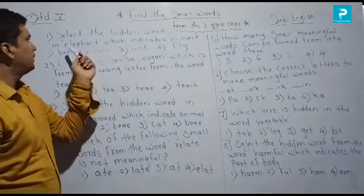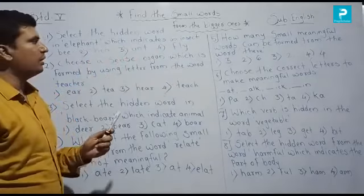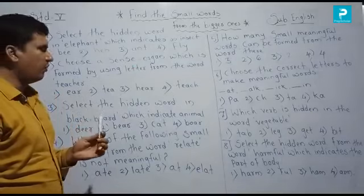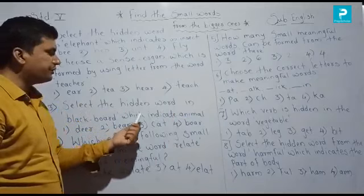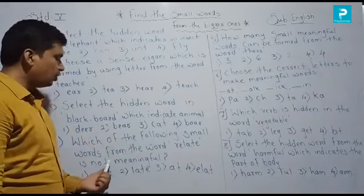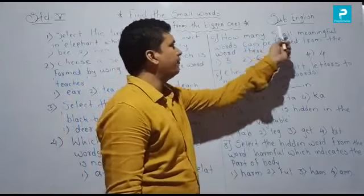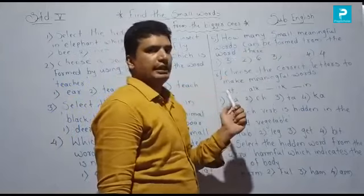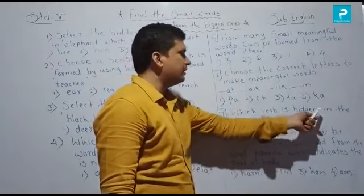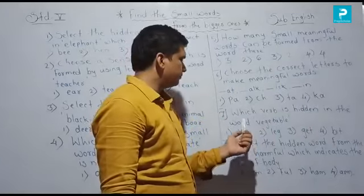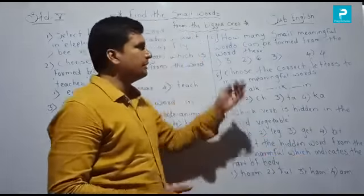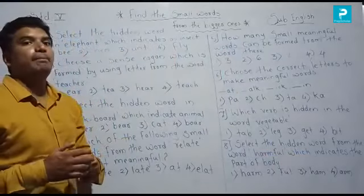First question: Select the hidden word in any font which indicates an insect. Second: Choose a sense organ which is formed by using the letters from the word 'teacher.' Third: Select the hidden word in 'blackboard' which indicates an animal. Fourth: Which of the small words from the word 'related' is not meaningful? Fifth: How many small meaningful words can be formed from the word 'there'? Sixth: Choose the correct letters to make meaningful words. Seventh: Which word is hidden in the word 'vegetable'? Eighth: Select the hidden word from the word 'harmful' which indicates a part of the body.